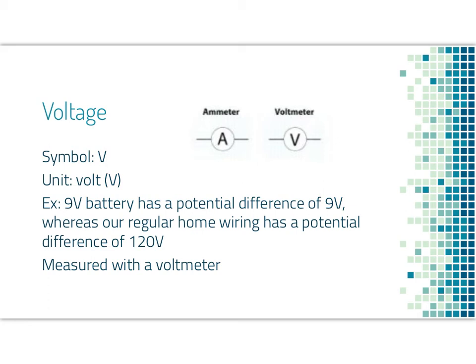The symbol for voltage in an equation is V, which is really nice, and the unit itself is a volt, which is also represented by a V. We had an ammeter which measures current, a large current, and a voltmeter looks very similar measuring the voltage or the push of electrons. So a 9-volt battery has a potential difference of 9 volts across it, whereas our regular home wiring has a potential difference of 120 volts. So we could say that there is a stronger push of electrons in our home wiring than there is in our battery. Voltage is measured by a voltmeter connected into that circuit.